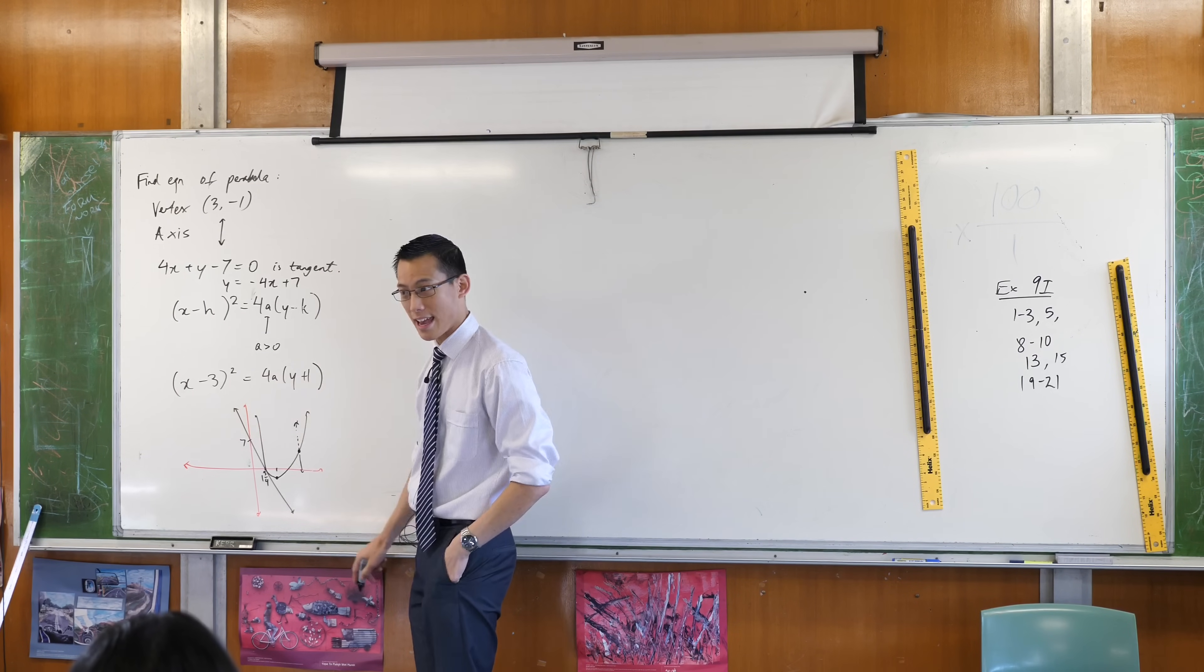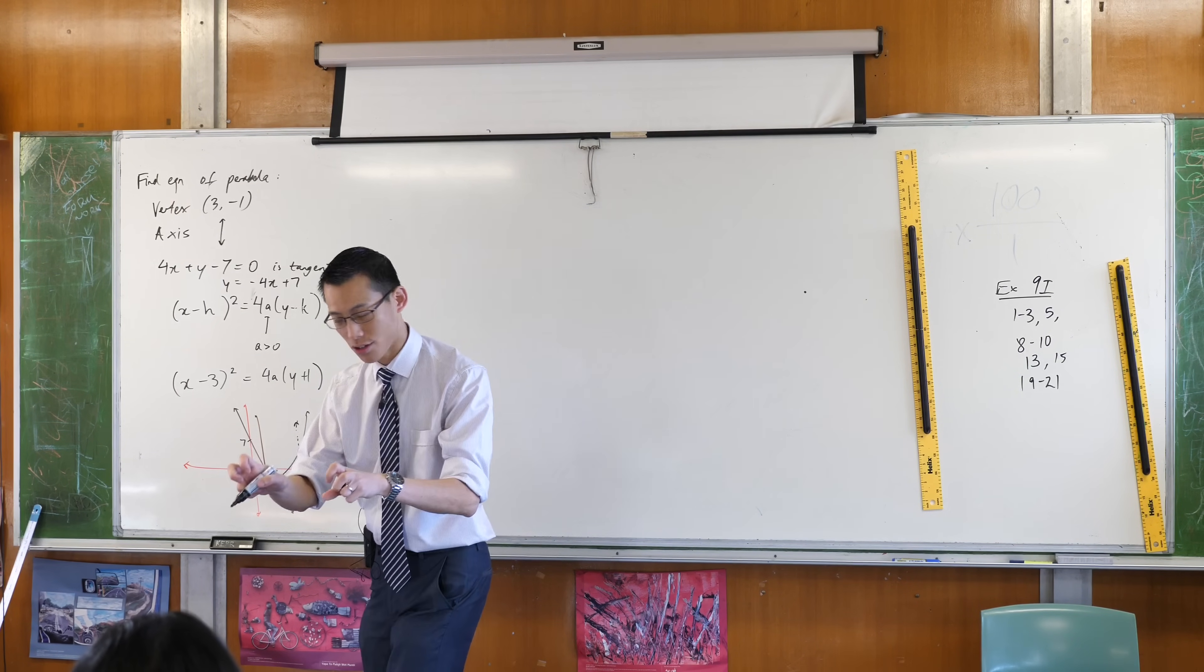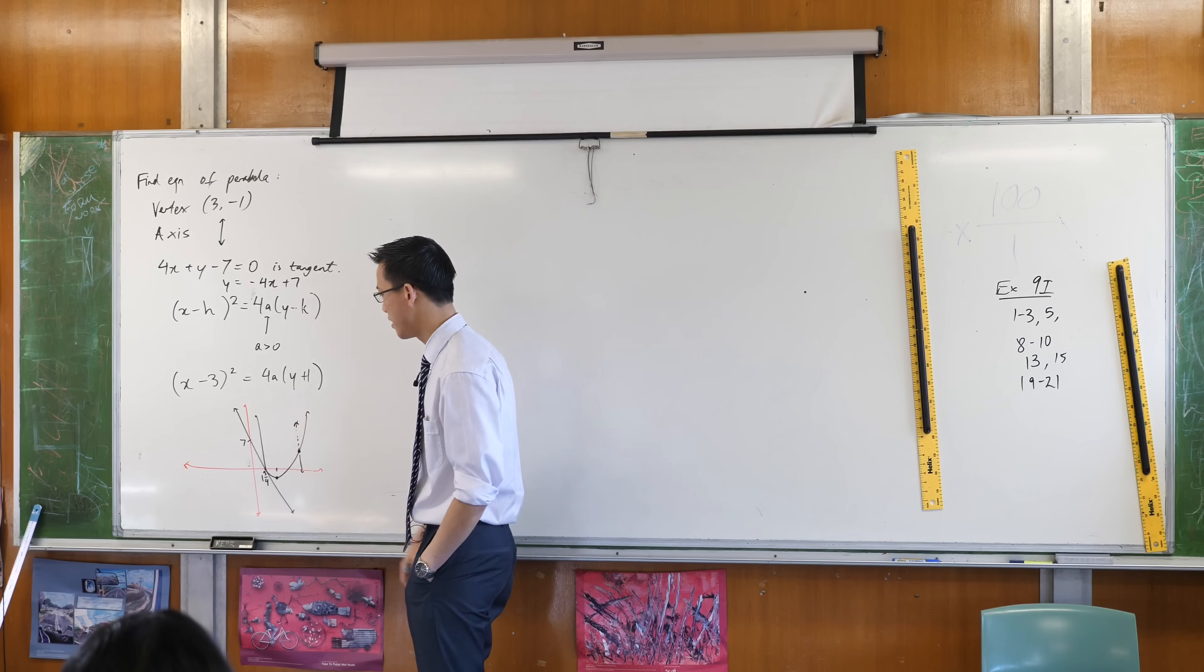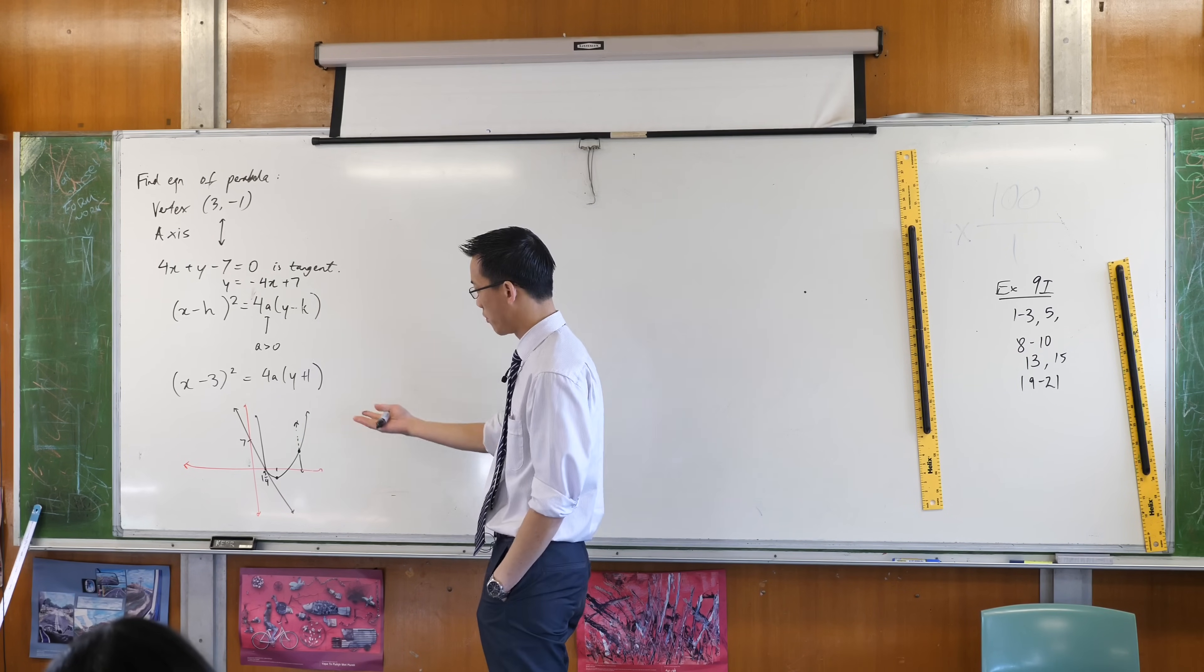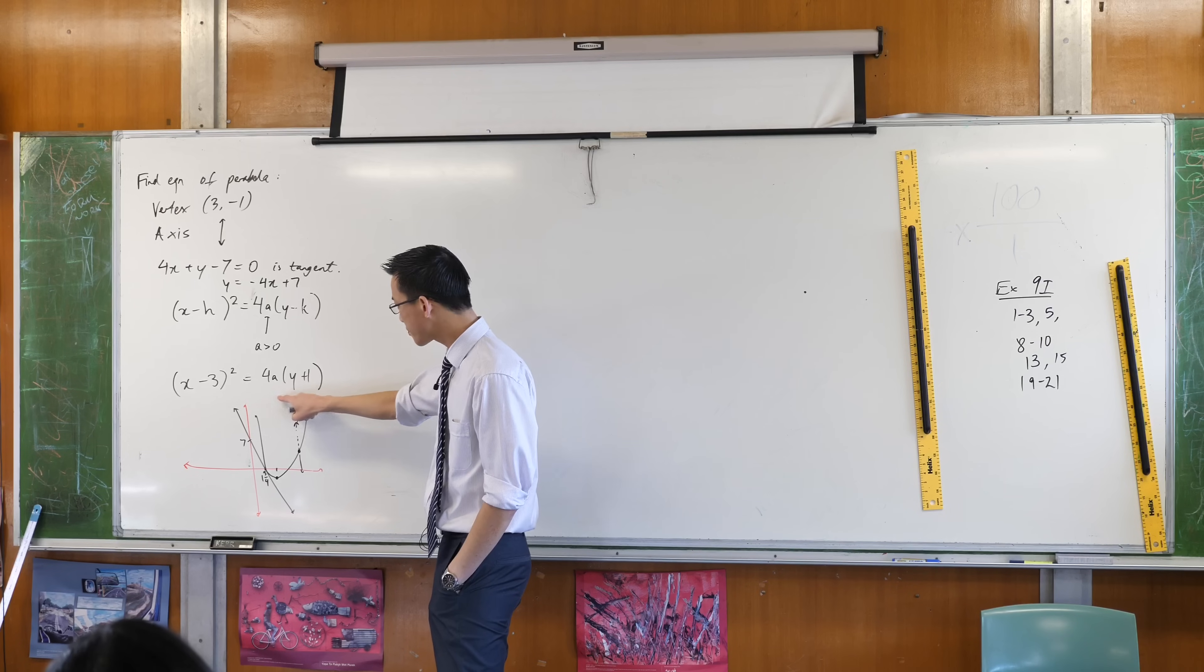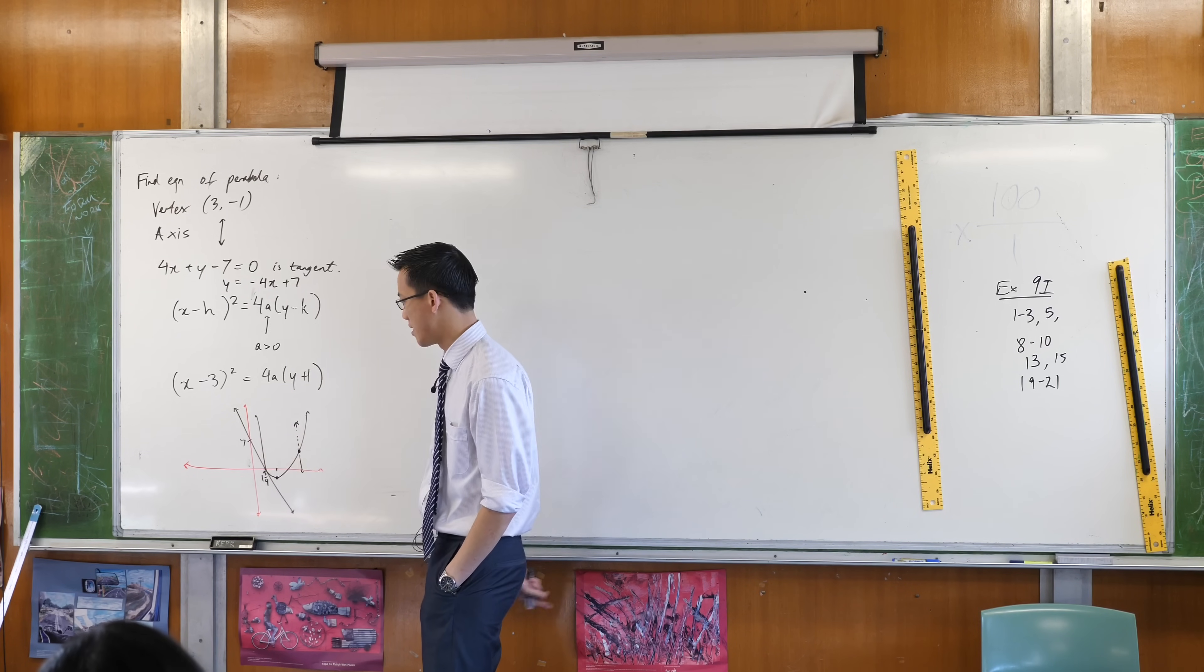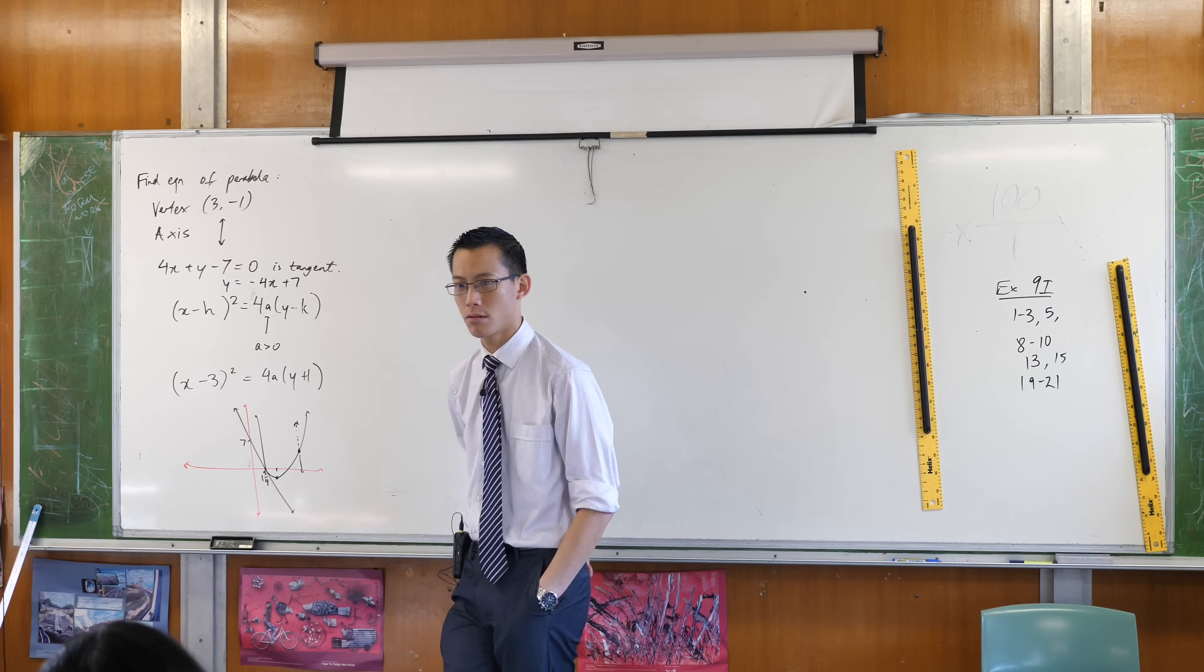So this is a really important idea to know just overall. The thing that makes it a tangent, the thing that makes it just touch, is that it has the same gradient at the point of intersection. So how can I use all of these ideas to find out what a is, right? Well, if I were to try and find that point, what would I do? What would I actually do?